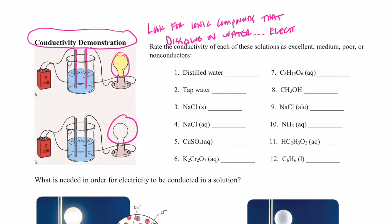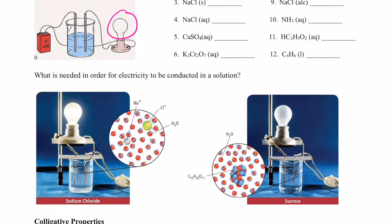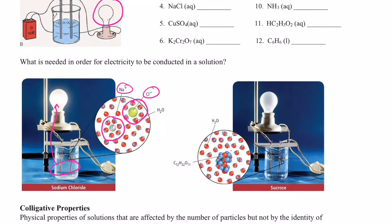Ionic compounds that dissolve in water are called electrolytes — that means they will conduct electric current when dissolved in water. Sodium chloride solution is made up of sodium ions and chloride ions, and if those ions are able to freely move throughout the solution, they can complete the circuit and cause the light bulb to light. However, if we have molecules that don't produce mobile ions, they cannot complete that circuit and the light bulb will not light.